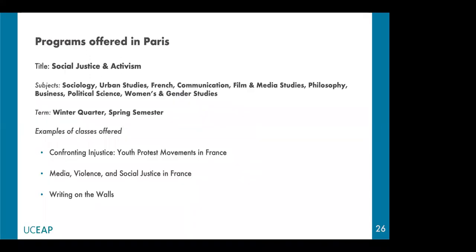The first Paris program is Social Justice and Activism in Paris, available as a winter quarter or a spring semester. This interesting option is ideal for students interested in sociology, political science, and gender studies. Some of the activities that are part of the classes are a visit to the Musée de la Libération in the Confronting Injustice class, and a visit to the Immigration Museum in the Documenting the Periphery class.